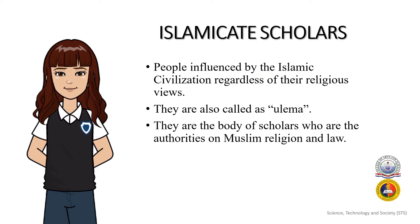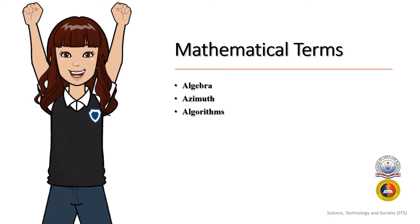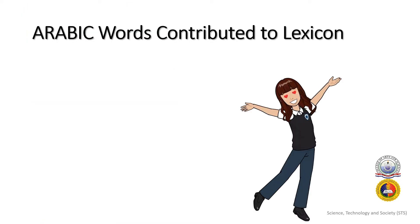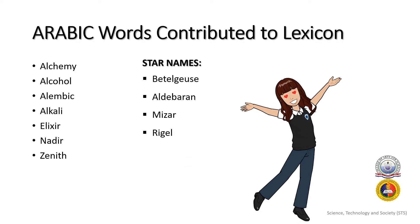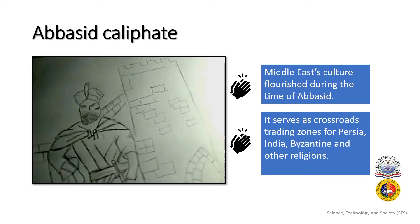Islamicate scholars are people influenced by the Islamic civilization, regardless of their religious views. These scholars brought us mathematical terms such as algebra, azimuth, and algorithms. Additionally, there are several Arabic words that have enriched our scientific lexicon, such as alchemy, alcohol, alembic, alkaline, elixir, nadir, zenith, and star names such as Betelgeuse, Aldebaran, Mizar, and Rigel. Their culture flourished during the time of the Abbasid Caliphate, which served as a crossroads trading zone for Persia, India, Byzantium, and other regions.